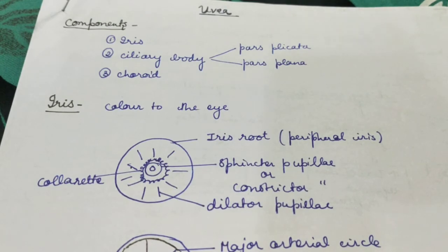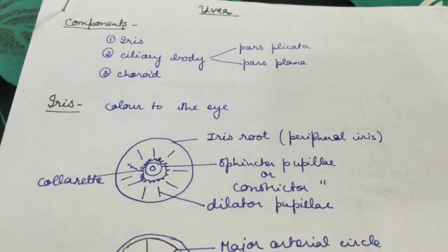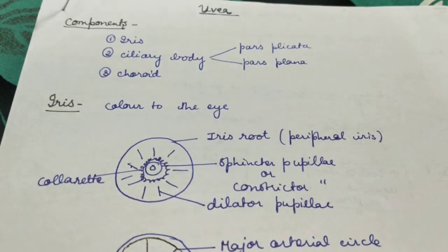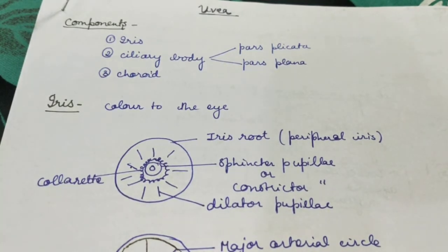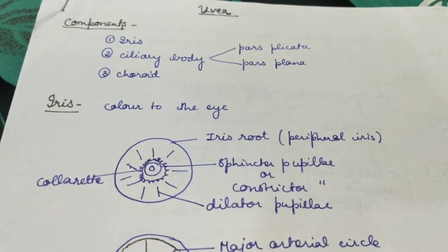That peculiar appearance is because of the colorate and the arrangement of the sphincter and dilator pupillae muscles. As you can see in the diagram, the iris root is the peripheral iris. In the center is the sphincter pupillae or constrictor muscle, and then radial spokes are present which form the dilator pupillae. Around the sphincter pupillae there is a colorate present.